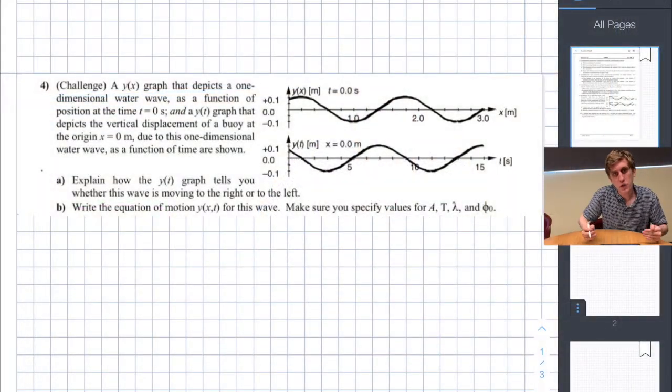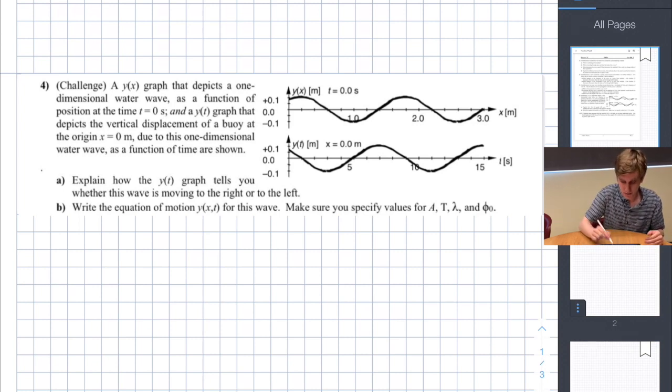Now in this problem we have two graphs of a wave, one of the wave as a function of position and one of the wave as a function of time. Our goal is to figure out how to write down the wave equation based on this information.